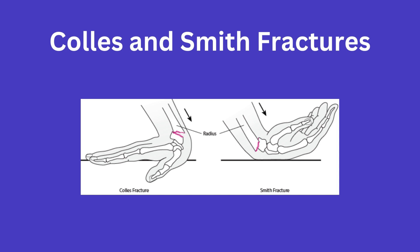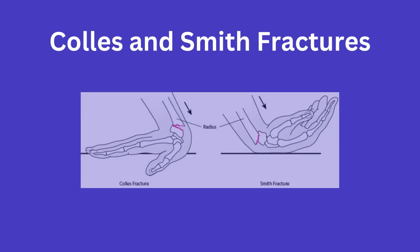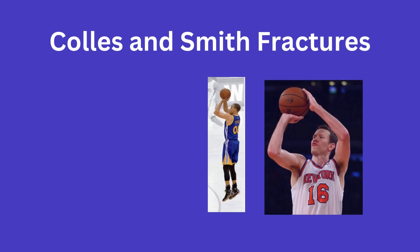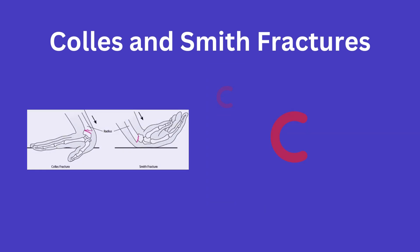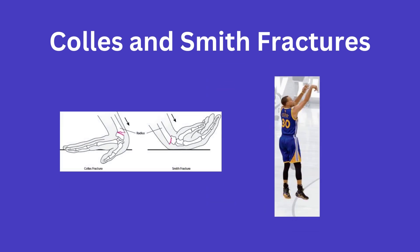To remember that Colles' is correlated to wrist extension and Smith is correlated to wrist flexion, think of shooting a basketball. Wrist extension as you start your shot makes a sort of C shape for Colles', and the follow-through leads to wrist flexion making an S shape for Smith. Or you can think of shooting for S and Smith — whichever works for you.